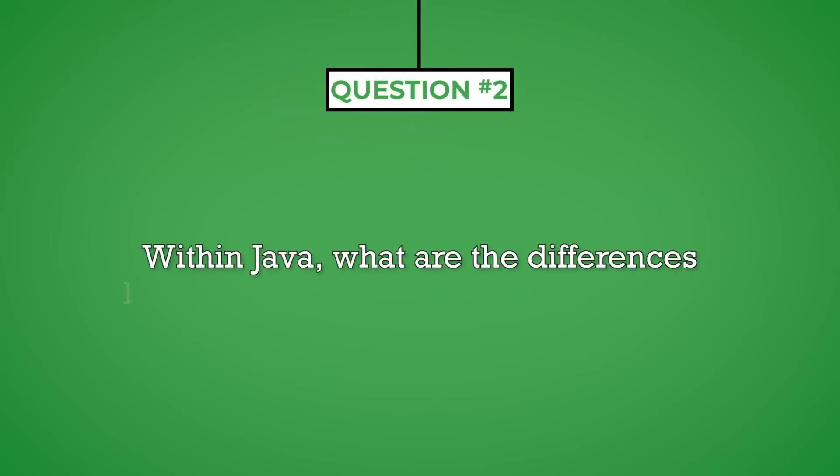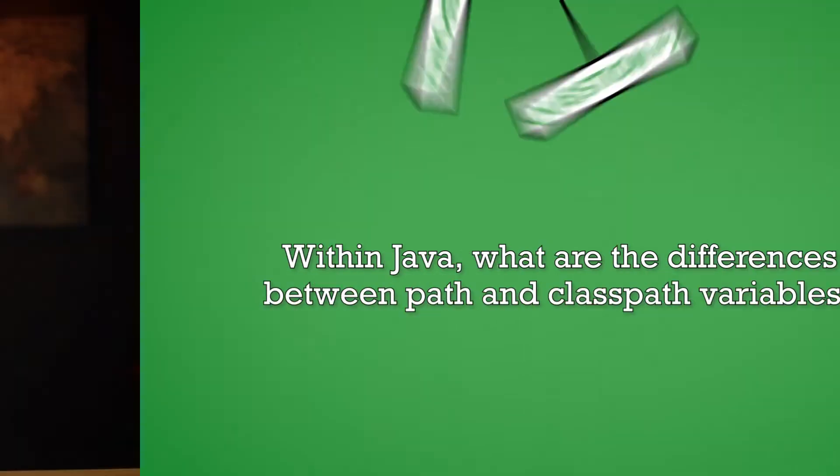Question number two: Within Java, what are the differences between path and class path variables? This is a common format of a technical question. Technical questions ask you about concepts or items related to the work you do. They sometimes ask you to compare similar concepts or to describe how they are used. When answering technical questions using this format, you should first define the terms you were asked about, then either compare them or describe how they are used. You may provide an example if it helps illustrate your answer.